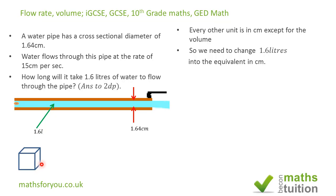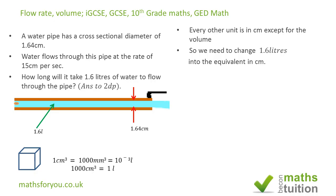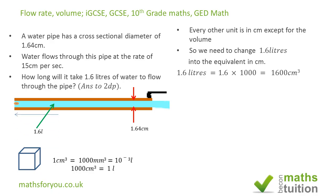Imagine a small cube with dimensions 1 cm × 1 cm × 1 cm, giving a volume of 1 centimeter cubed. That same cube is 10 mm × 10 mm × 10 mm, so 1000 millimeters cubed. There are 1,000,000 mm³ in one liter, meaning 1000 cm³ equals one liter. Therefore, 1.6 liters becomes 1.6 × 1000 = 1600 centimeters cubed.